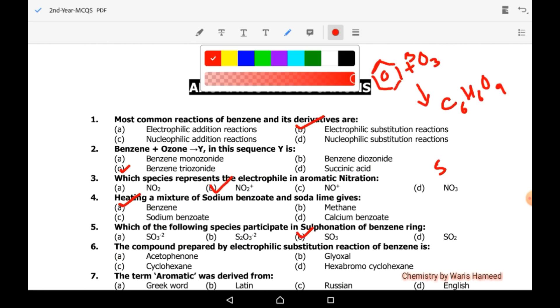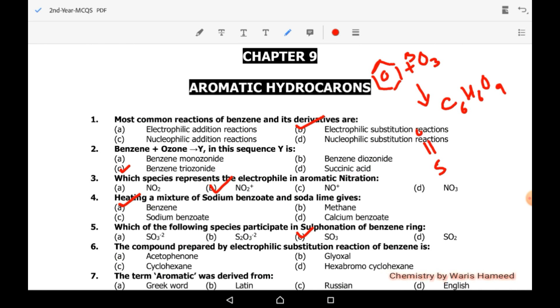Sulfur is the central atom attached with three oxygen atoms. We know that oxygen is electronegative, so it attracts electronic density toward itself, causing sulfur to be more partial positive. So it can attract electronic density toward itself. SO3 acts as an electrophile in sulfonation.